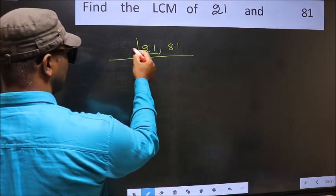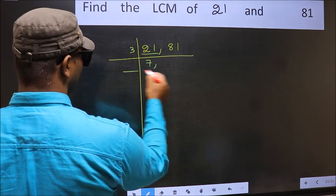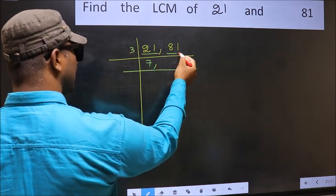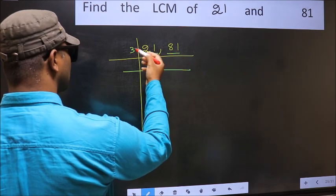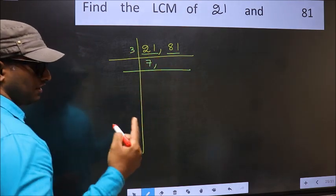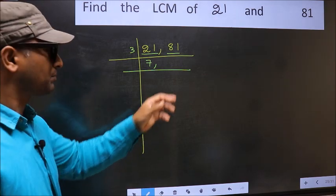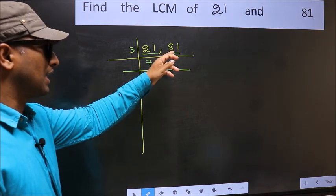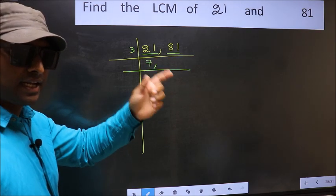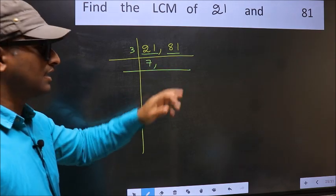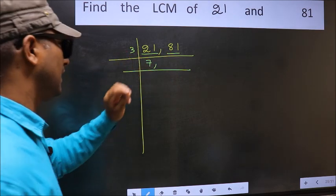21 is 3 sevens — 3 times 7 equals 21. The other number is 81. Now to check whether 81 is divisible by 3 or not, add the digits: 8 plus 1 gives 9, and 9 is divisible by 3. So this number is also divisible by 3.